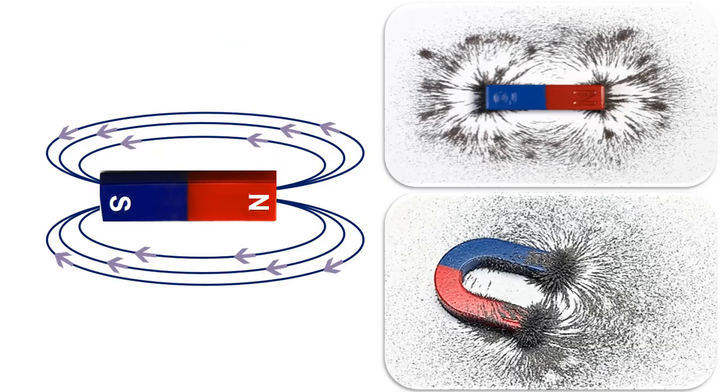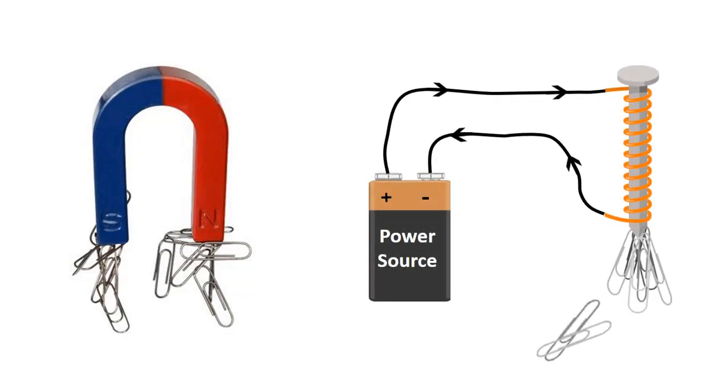Although we cannot see the magnetic field lines around the magnet, we can see them by experimenting with iron powder. If iron powder is scattered around the magnet, this powder is collected on magnetic field lines that move from the N pole of the magnet to the S pole. As seen here, just as a magnet with a fixed magnetic field attracts the paper clips, it attracts the paper clips around it when voltage is applied to the coil structure that we have created with copper windings around a nail.